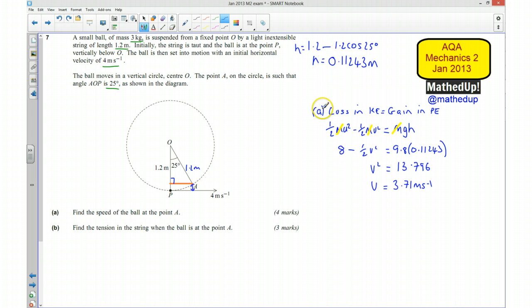So that's part A, and we've worked out what the speed is. Now for part B, we need to find the tension in the string when the ball is at point A. So when we've got to this point here, we want to know what the tension in the string is. In order to solve this, we're going to have to resolve what we call radially, or towards the centre.